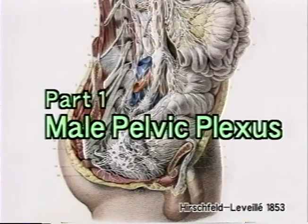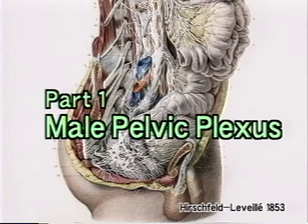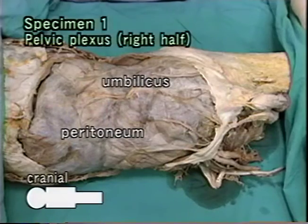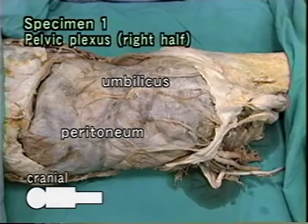In part one, the male pelvic plexus will be dissected. Due to the continuity of the pelvic plexus and abdominal autonomic nerves, first we will dissect the abdominal structures.